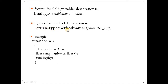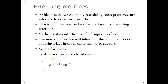For example, an interface named area has a data field pi of type float, which is final with value 3.14. It has two declared methods: compute, with return type float and two float parameters, and display, with return type void and no parameters. Just as a class can be extended into a new class for memory reuse, we can extend one interface while defining a new interface, giving us super interface and sub interface concepts.